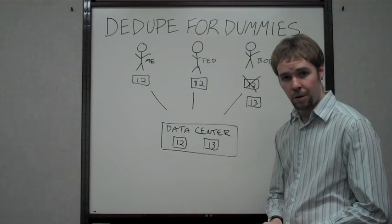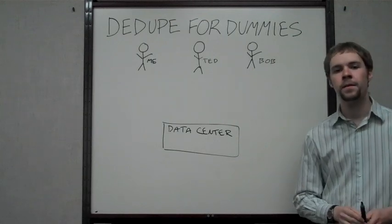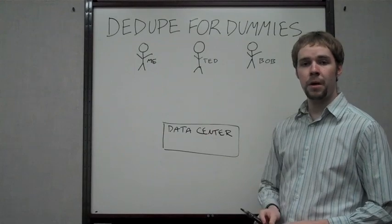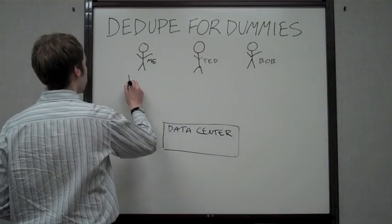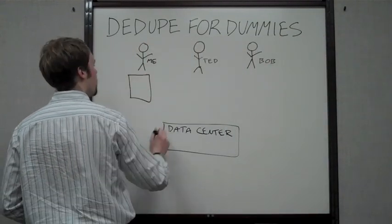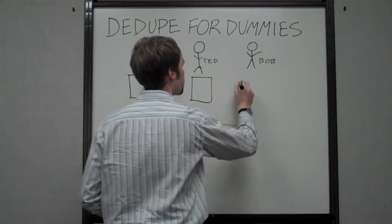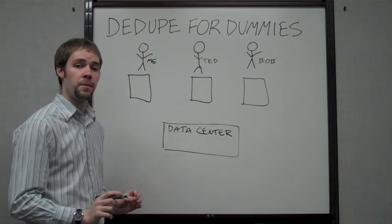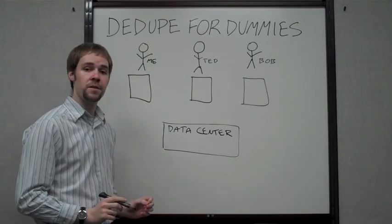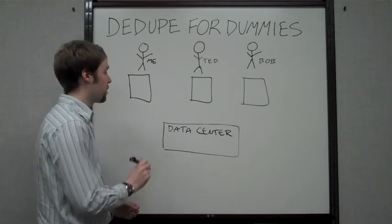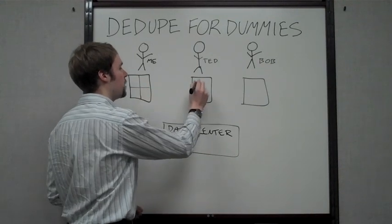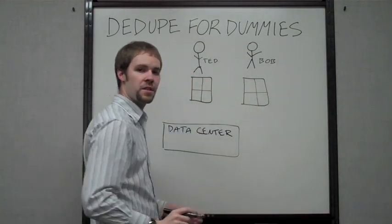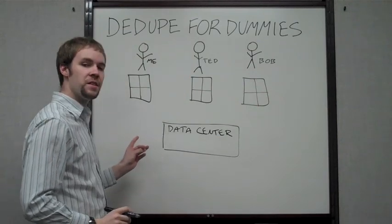Let me show you how block-level deduplication works. For block-level deduplication, it works a little bit differently. Let's give me, Ted, and Bob files again. Let's make them a little bigger to make it easier to see what's going on. Before anything happens, when you try to back up your files, block-level deduplication breaks it up into a lot of little pieces. These pieces are called blocks, and the system figures out what's in each block.